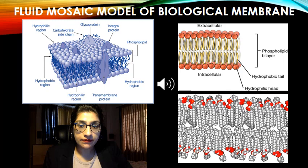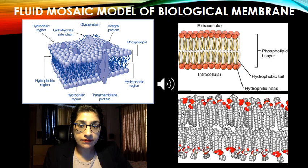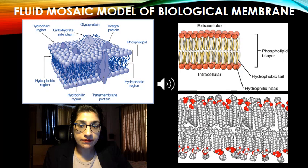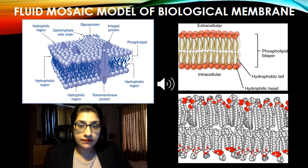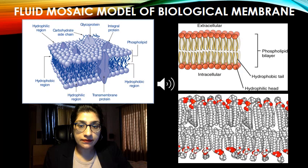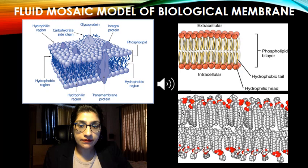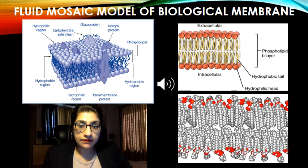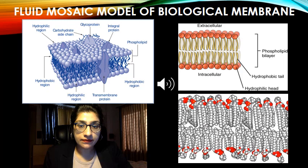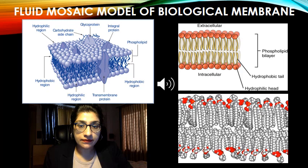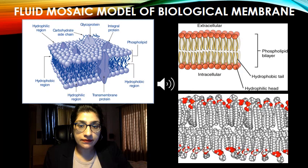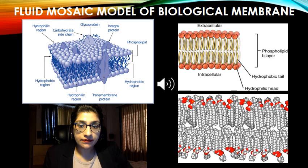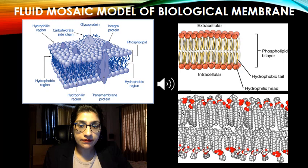This is the most accepted theory amongst many others and it is relatively new as it came in 1972. This is the most accepted theory about cell structure. Phospholipid molecules, each one with a hydrophobic and hydrophilic end, make up most of the membrane.